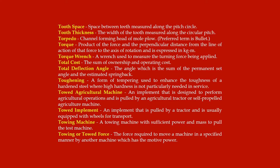Torque: the product of the force and the perpendicular distance from the line of action of that force to the axis of rotation, expressed in kilogram-meter. Torque wrench: a wrench used to measure the turning force being applied. Total cost: the sum of ownership and operating cost. Total deflection angle: the angle which is the sum of the permanent set angle and the estimated springback. Toughening: a form of tempering used to enhance the toughness of hardened steel where high hardness is not particularly needed. Towed agricultural machine: an implement designed to perform agricultural operations and pulled by an agricultural tractor or self-propelled agricultural machine.